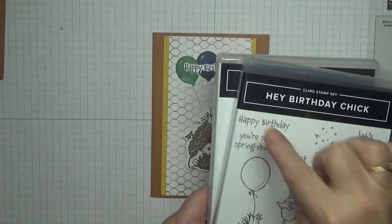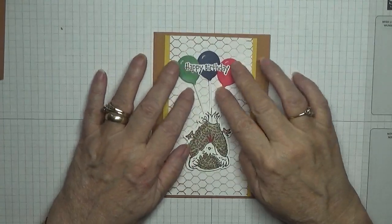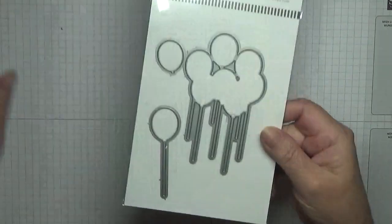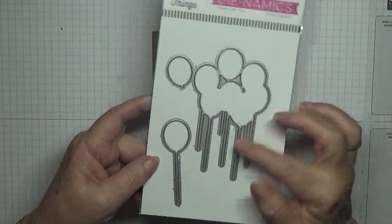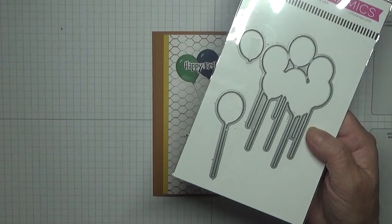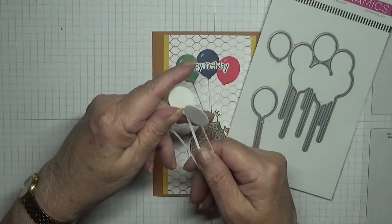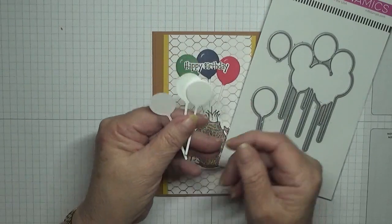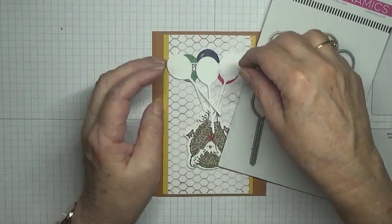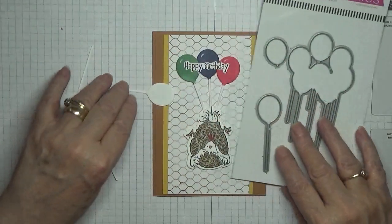I also used a die, isn't a Stampin' Up die, it's one I got for my birthday and it is My Favorite Things balloons. I use this one which I've already cut out, three balloons. I just thought they were really nice and I did then which we will color in and this one we'll fussy cut out.